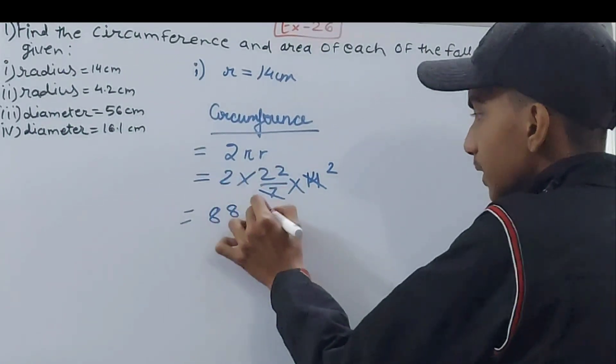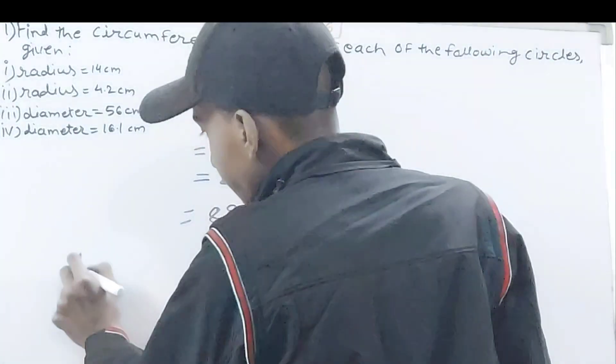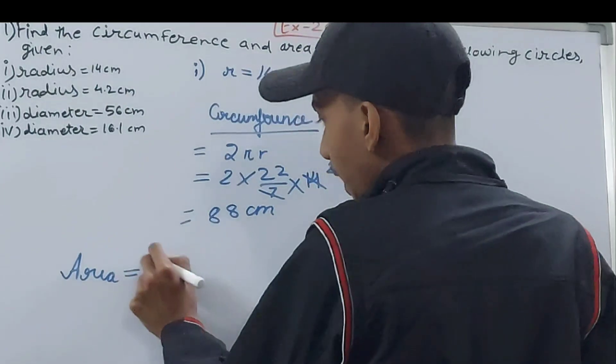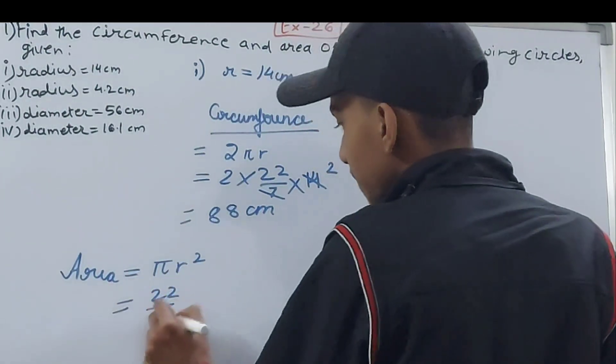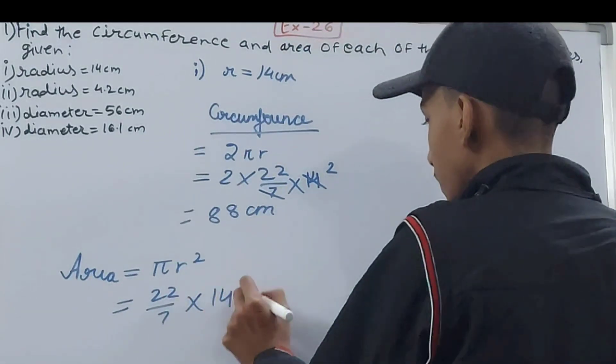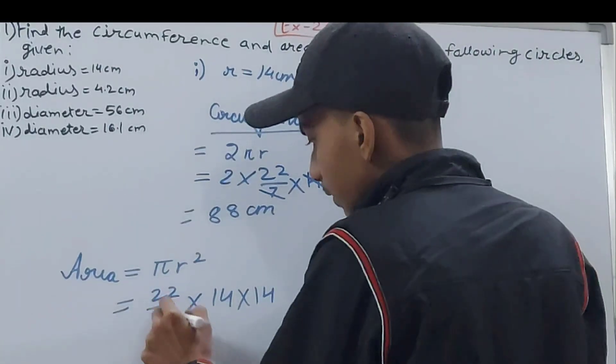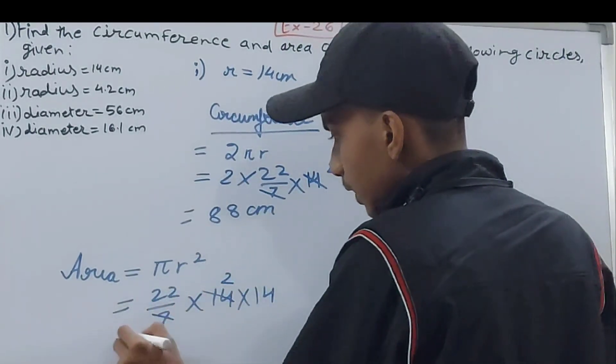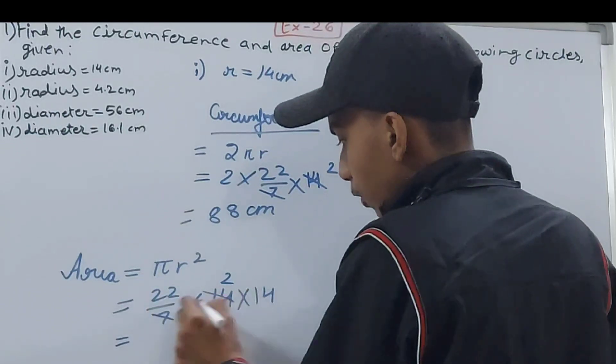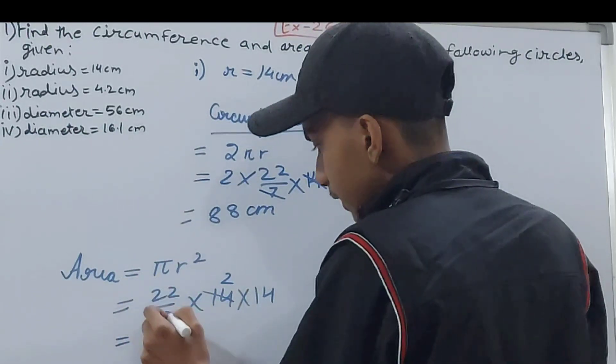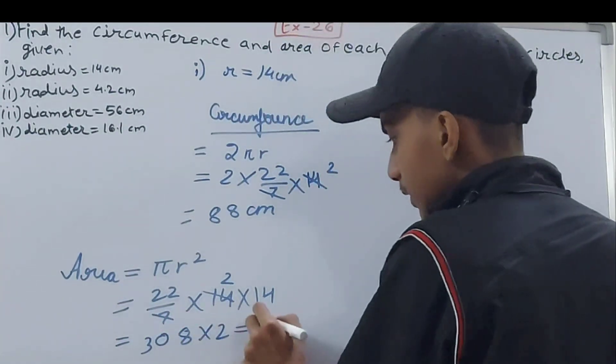Now comes the next part, that's the area. For area we will be doing πr², so 22/7 × 14 × 14, the square of the radius. 14 × 14 × 14 × 2, that's 8 and 2 carried over, 28 again and 3, so 308 × 2 equals 616 square centimeters.